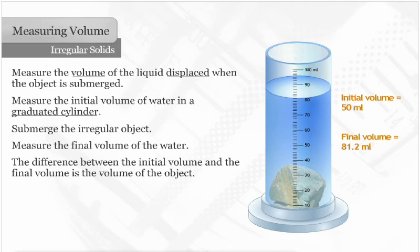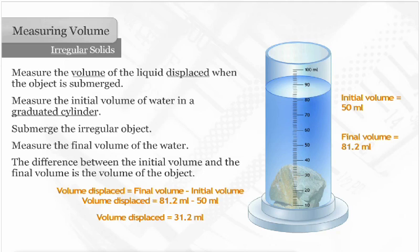To find the volume displaced, subtract the initial volume from the final volume. Doing so yields 31 and 2 tenths milliliters. So the volume of the rock is 31 and 2 tenths milliliters.